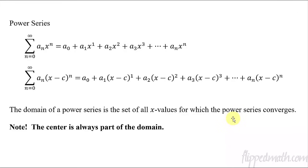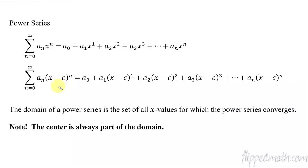What I have in front of us here is some examples of power series, where we just have a very basic first term, second term, third term, and so forth, if n starts at zero in this case. So the difference between these two things is just this x minus c — kind of like what we've been doing — which is where the power series is centered around. It's centered around x equals c.